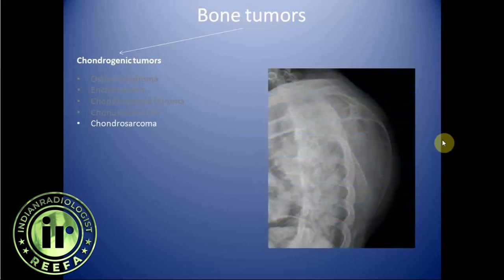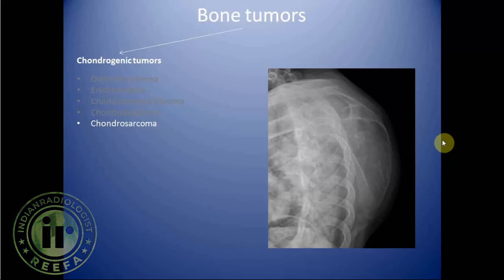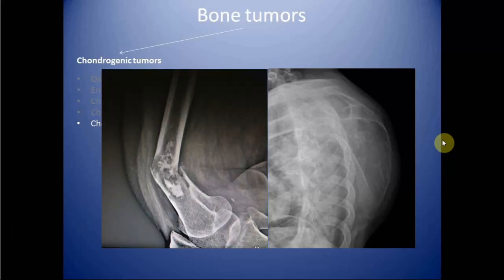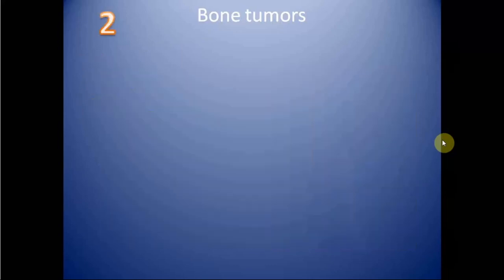Next is chondrosarcoma, which is a malignant bone tumor that produces chondroid matrix. Chondrosarcomas are mostly seen in elderly patients and are most commonly seen in flat bones like the pelvis and scapula, but can also be seen in long bones. Chondrosarcoma can be primary or secondary, arising from differentiation in osteochondromas and enchondromas. Chondrosarcomas are basically slow-growing tumors with metastasis occurring at a late stage.